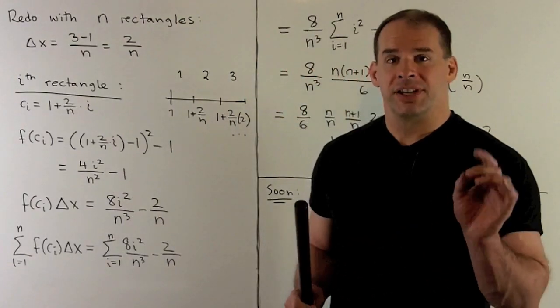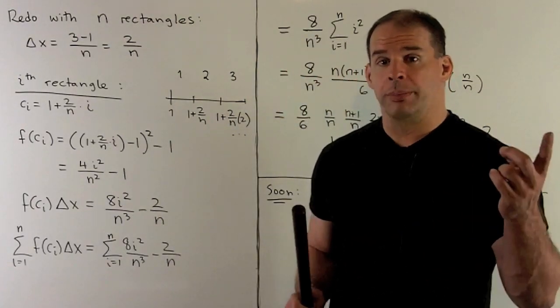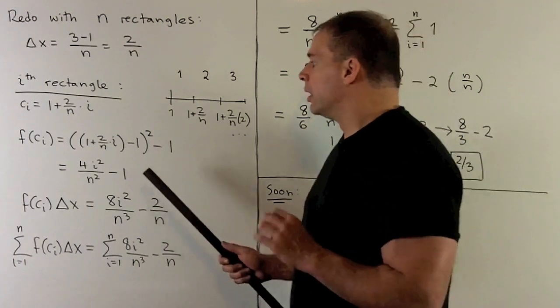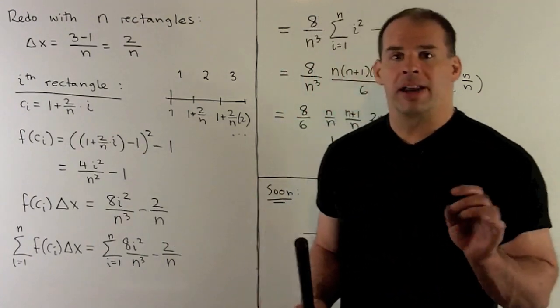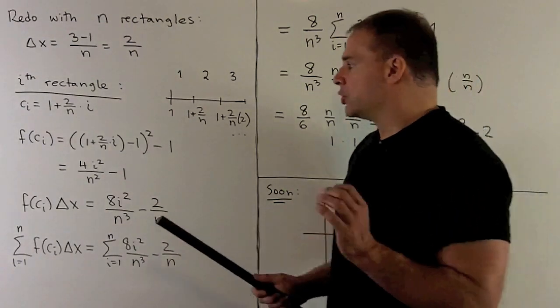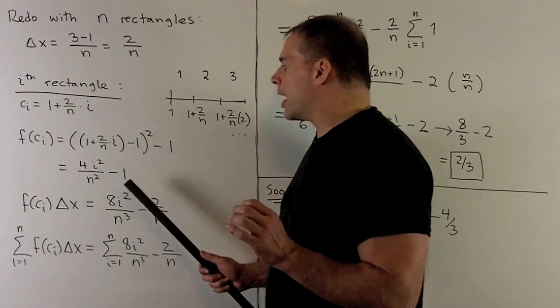Now, we apply f to get our height with a sign on it, possibly. So, what are we going to do? Subtract 1, square it, and then subtract 1 again. So, we get 4 times i squared over n squared minus 1.